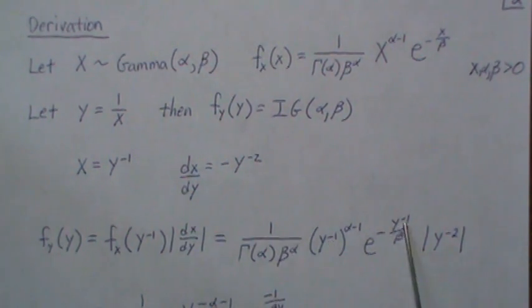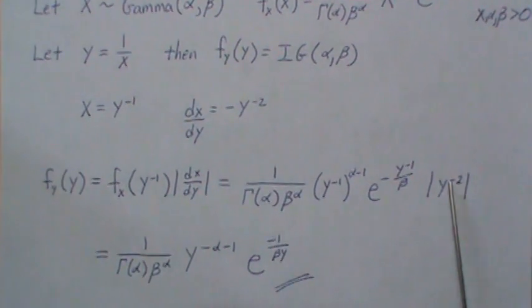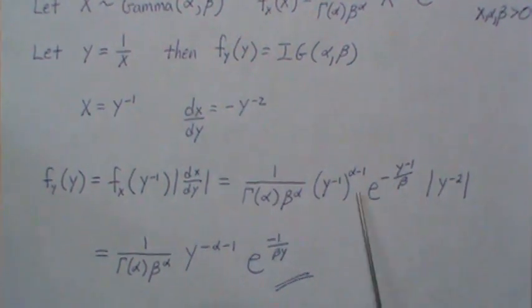So that's what this is, and this is a y to the minus 1. This is the Jacobian. And then when you combine the y's, you get this, and that's just minus 1 over beta y. And that's it.